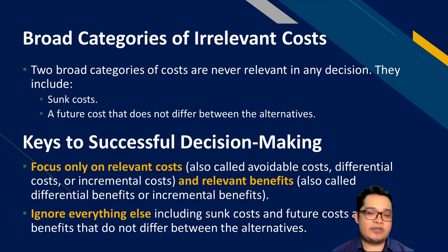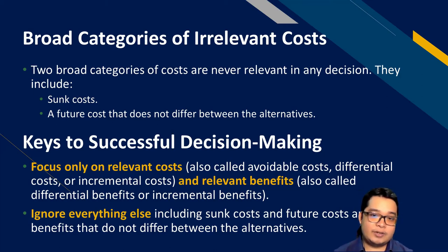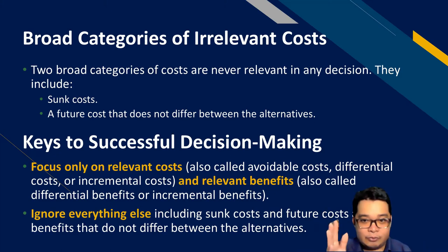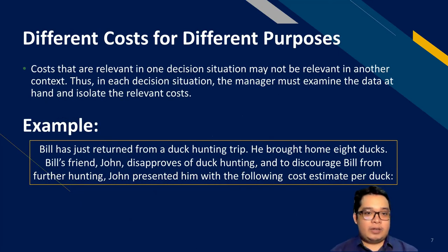The key to successful decision making is to focus only on relevant costs and benefits — avoidable costs, differential or incremental costs, and relevant or incremental benefits. You can ignore everything else because those items are irrelevant to the decision. Note that costs relevant in one situation may not be relevant in another — we'll explain that in a moment with an example.